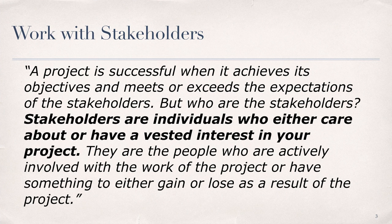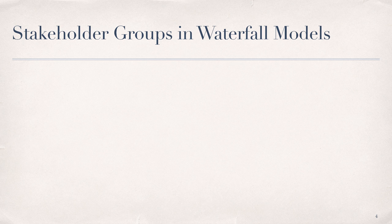In the project management text chapter assigned for this module, Watt states that a project is successful when it achieves its objectives and meets or exceeds the expectations of the stakeholders. But who are the stakeholders? Stakeholders are individuals who either care about or have a vested interest in your project. They are the people who are actively involved with the work of the project or have something to either gain or lose as a result of the project. It's important to identify all stakeholders and stakeholder groups during development of the project management plan to avoid costly problems later as a result of missing or misidentified user requirements.